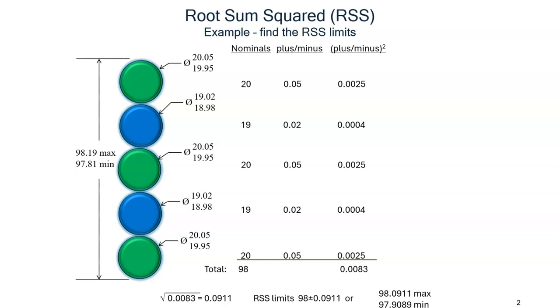We take the square root of the total of the squares of the plus-minus values and this is our plus-minus for the RSS limits. Note that the max and min RSS limits are a tighter range than the arithmetic limits.